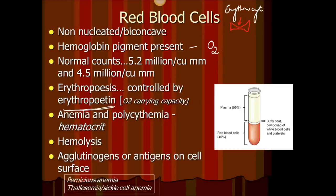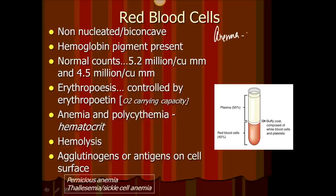The oxygen-carrying capacity is determined by how well erythropoiesis occurs, and that is controlled by erythropoietin produced by the kidneys. There are two important terms: anemia — whenever the oxygen-carrying capacity is decreased. Anemia could be a condition where the red blood cell count is less than normal, or where the red blood cell count is normal but hemoglobin is low, meaning each red blood cell does not have the adequate amount of hemoglobin.